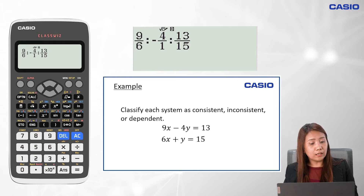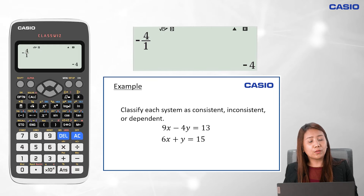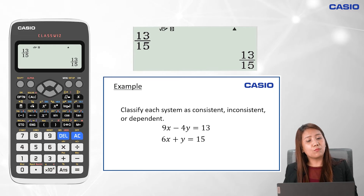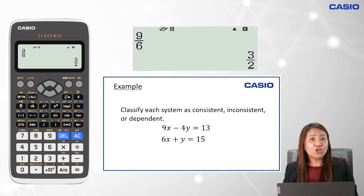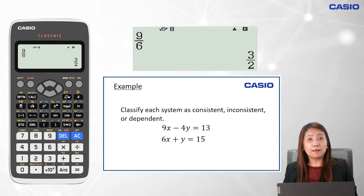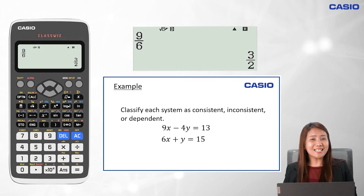Let's click on the equal sign. 9 over 6, when simplified, is 3 halves. Negative 4 over 1, when simplified, is negative 4. And 13 over 15, when simplified, is 13 over 15. Since the ratio of the coefficient of x, the coefficient of y, and the constant terms are not the same, then the graph defines intersecting lines. Therefore, the kind of system that we have is an independent and consistent system.